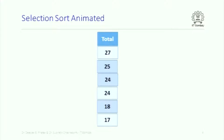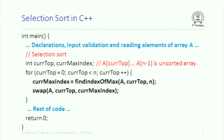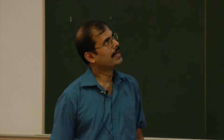Then in the remainder of the array we find the maximum element, which is 25, and swap it with the next position. Then 24 is swapped with the next position, then another 24, and finally 18 and 17 are already in the right positions. That is selection sort — at the end you have the entire array sorted in decreasing order. Just to recap, this is how the selection sort function in C++ looks like.